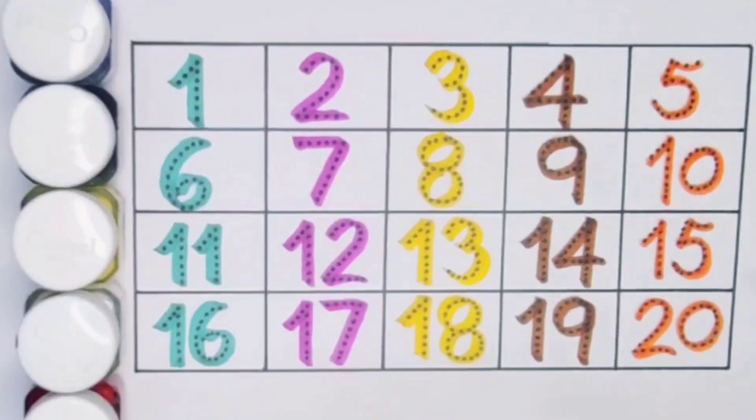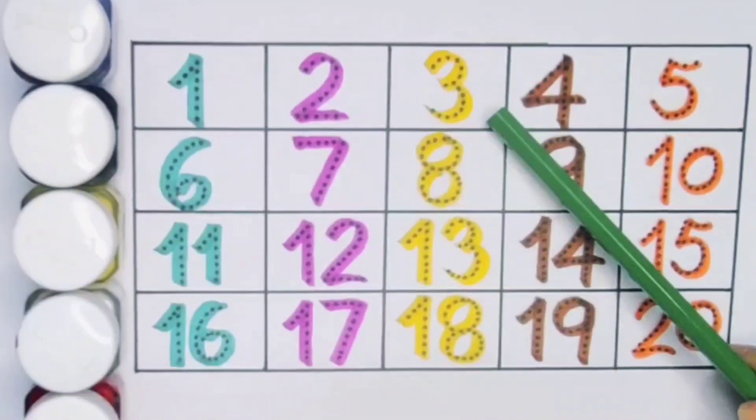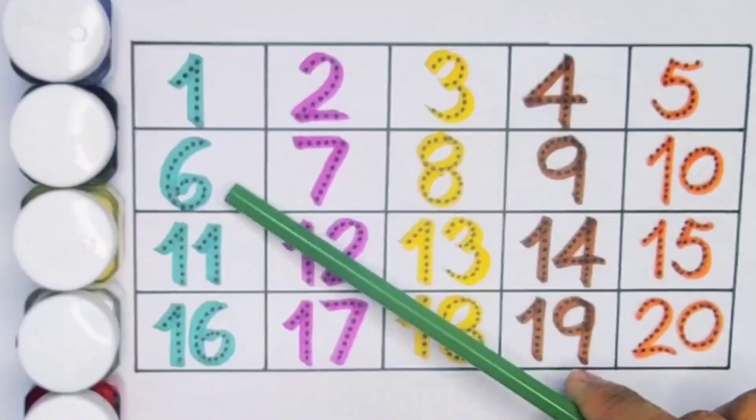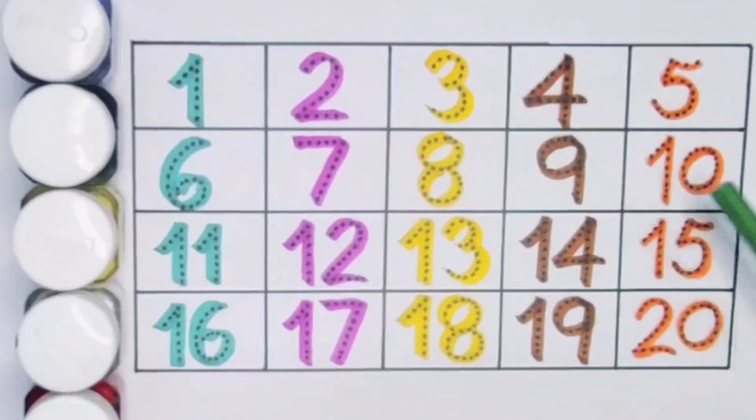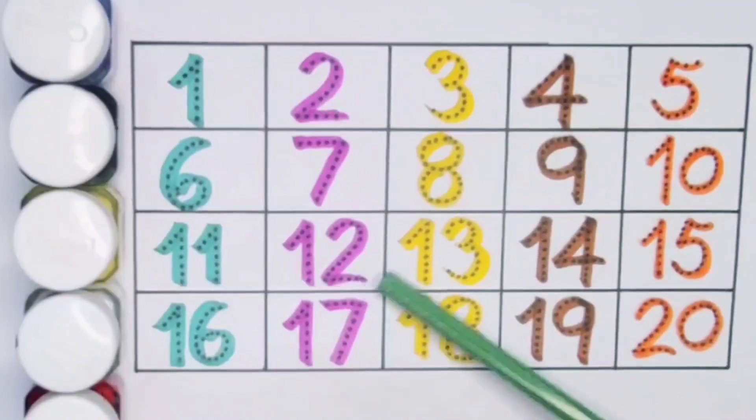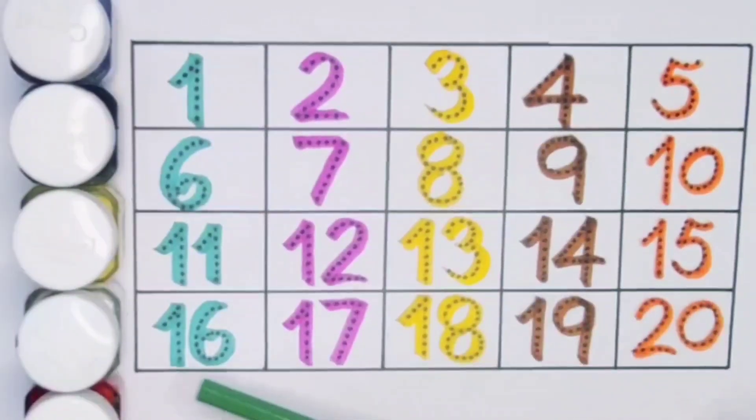What we learn? We learn 1, 2, 3, 4, 5, 6, 7, 8, 9, 10, 11, 12, 13, 14, 15, 16, 17, 18, 19, 20.